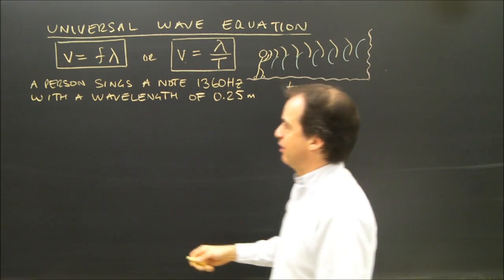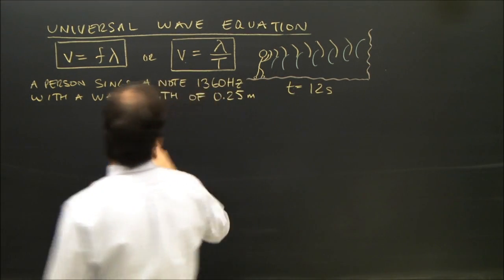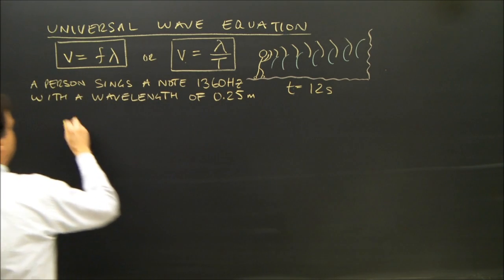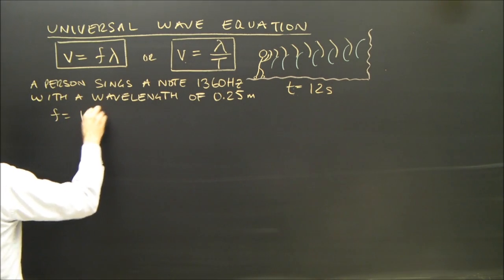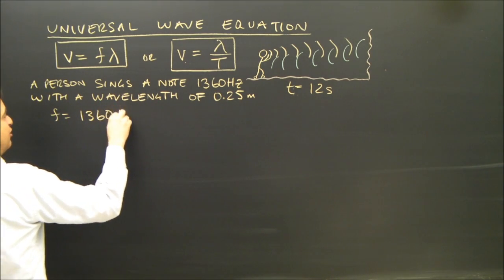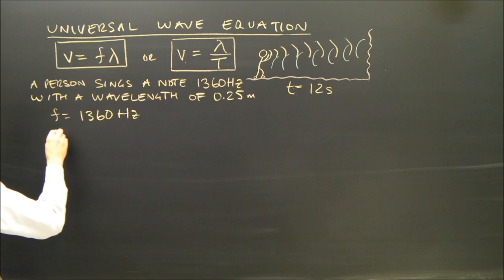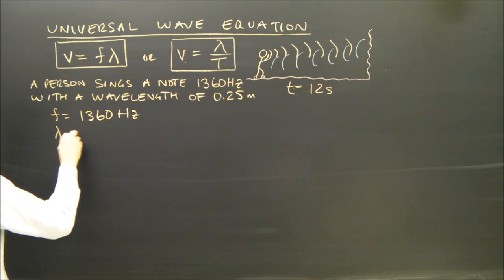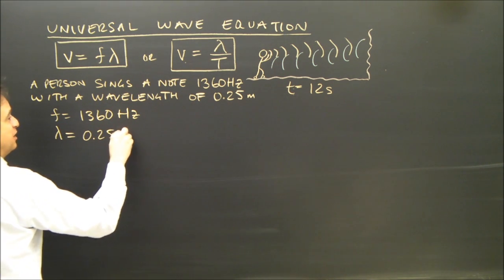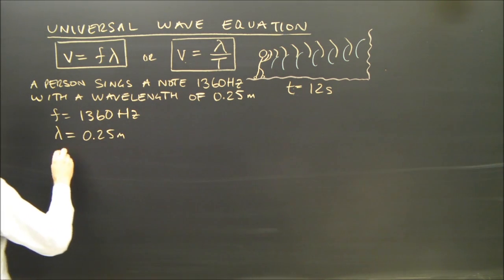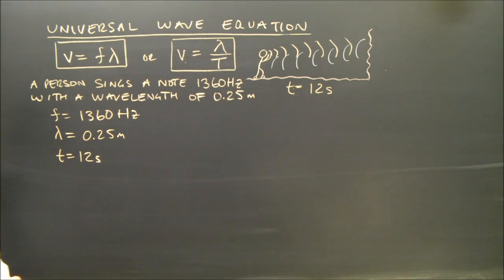First, I've got to write down what I'm given. The frequency is 1360 hertz. The wavelength, which is lambda, is 0.25 meters. The time for the echo is 12 seconds.